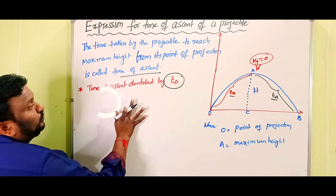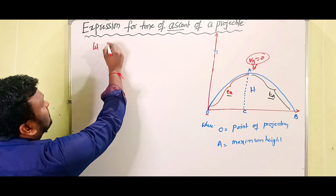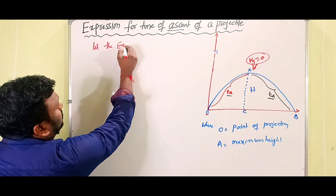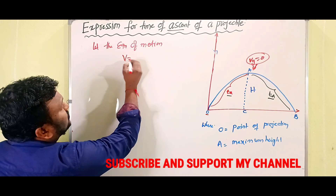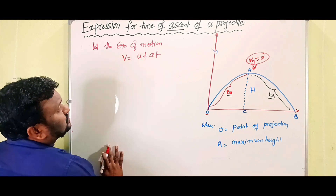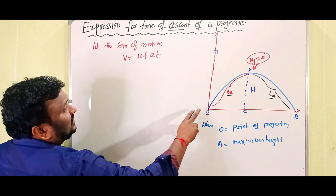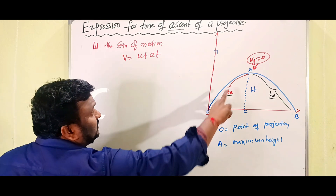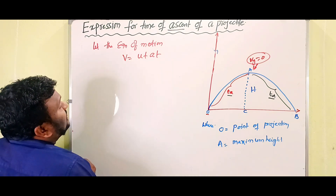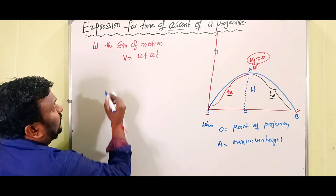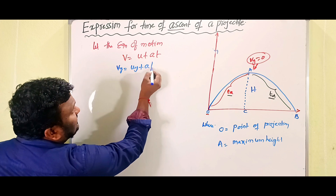Now we have to derive the expression for time of ascent. Let the equation of motion be: v = u + at. Since we are talking about motion from the point of projection to the maximum height, we write this with respect to the y-axis: vy = uy + at.